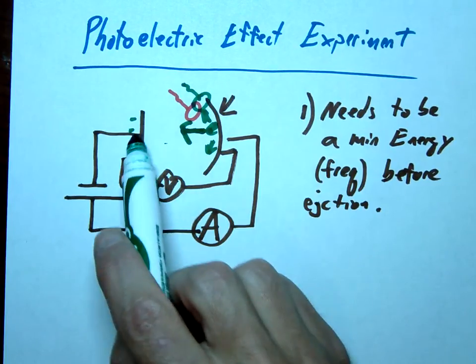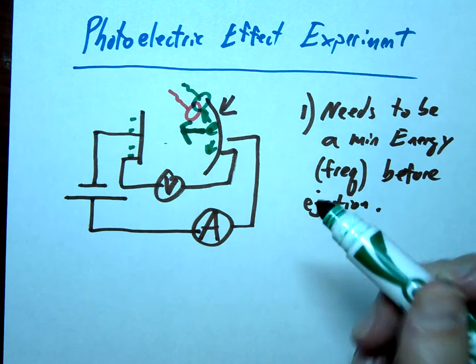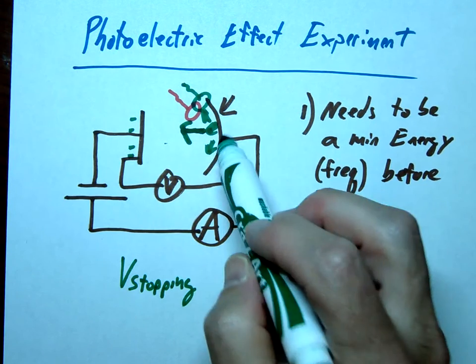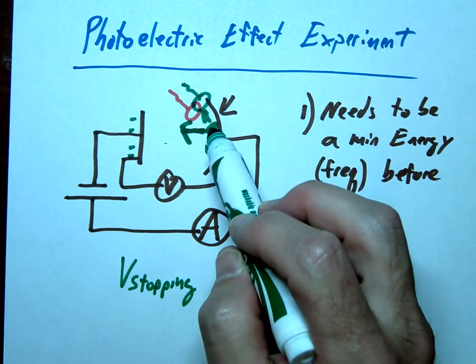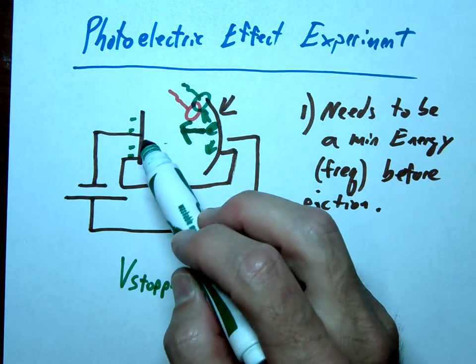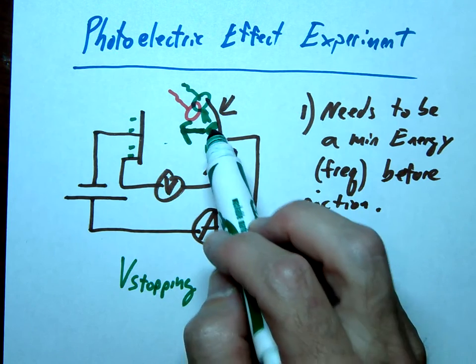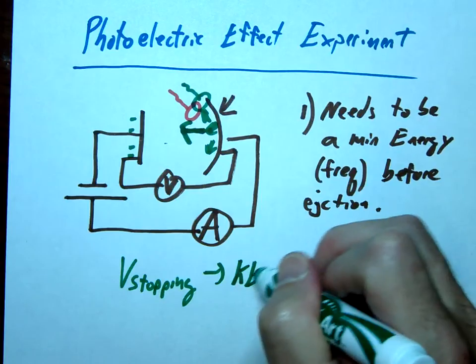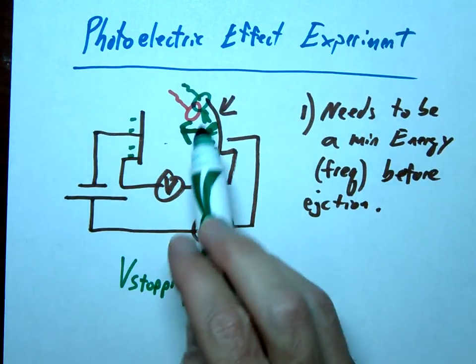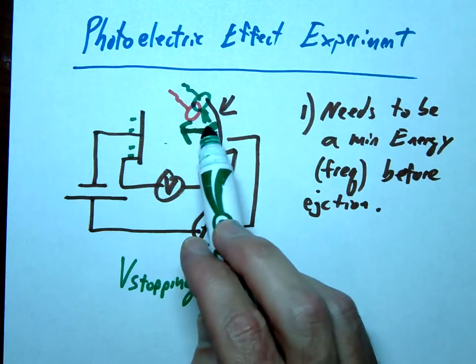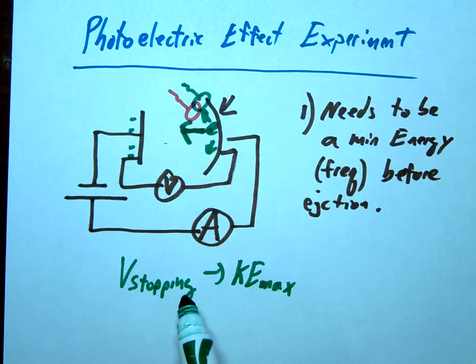That would be the voltage at which the electron is unable to make it across the plate. So the purpose of the stopping voltage is we can vary this and whatever that voltage is going to be. Remember voltage is a concept of energy. So whatever that voltage is going to be, that's going to tell us the kinetic energy, the maximum kinetic energy that that electron has to make it across. If this electron had more energy, then our stopping voltage would have to increase.